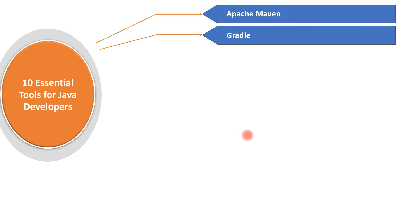Next is Gradle — an open source build automation tool based on the concepts of Apache Maven and Apache Ant. The main difference is that Maven uses XML for project configuration, while Gradle uses a DSL (Domain Specific Language) instead of XML. Gradle is widely used in open source Java projects like Spring and Hibernate. Personally, I'm a big fan of Maven and XML, so I prefer Apache Maven for developing Java projects.